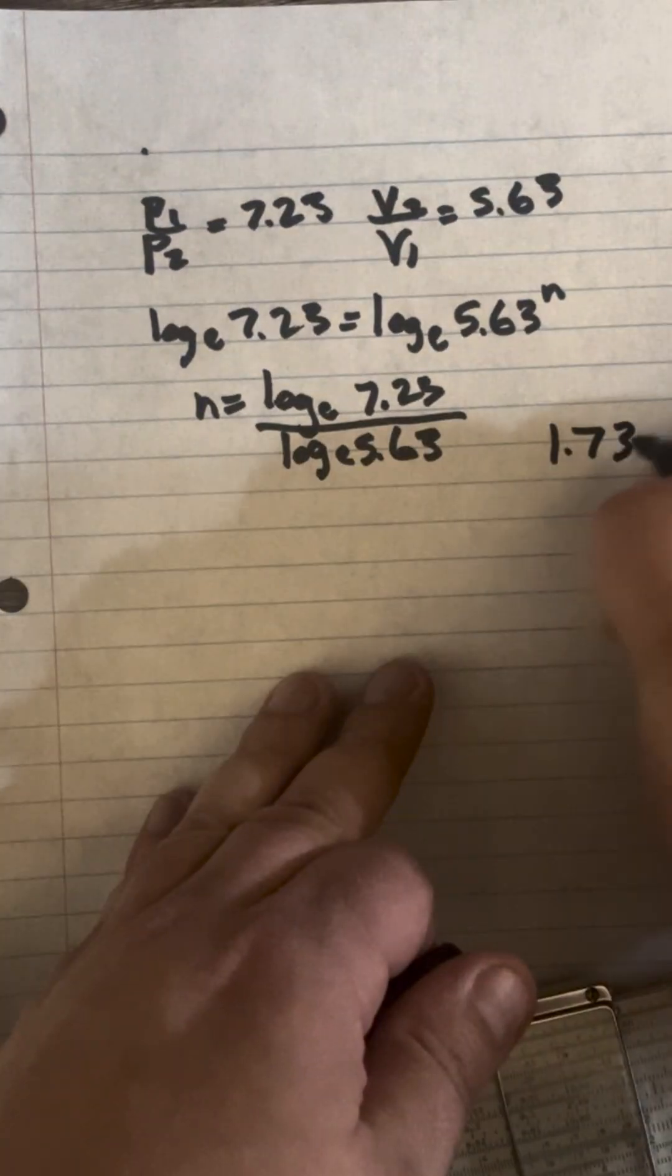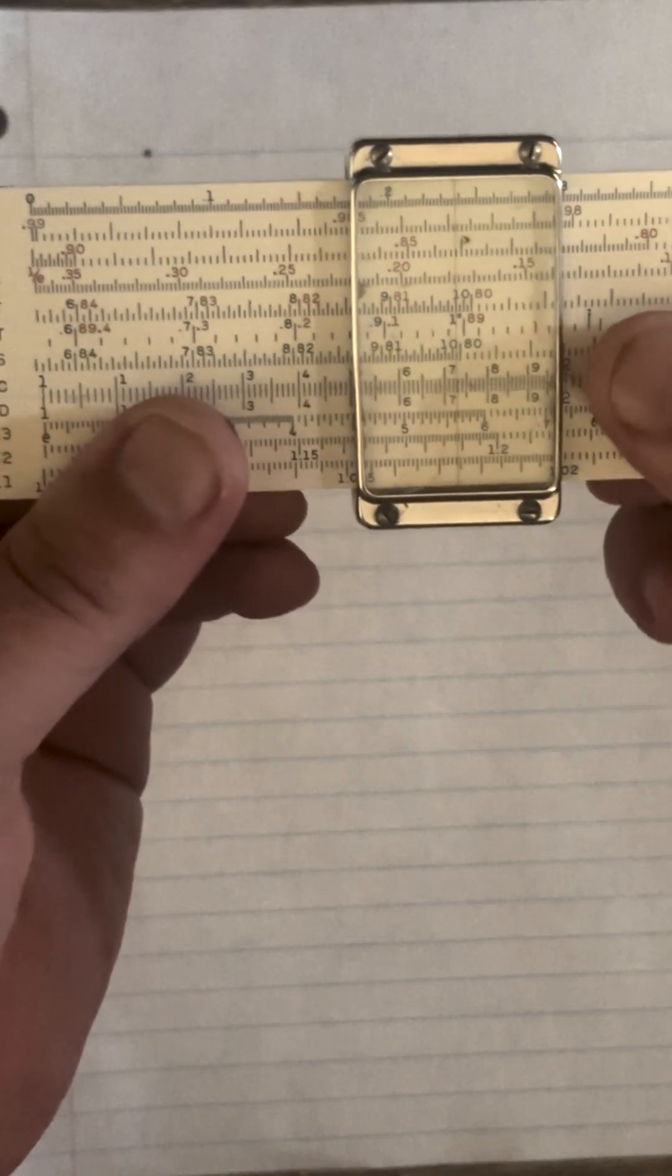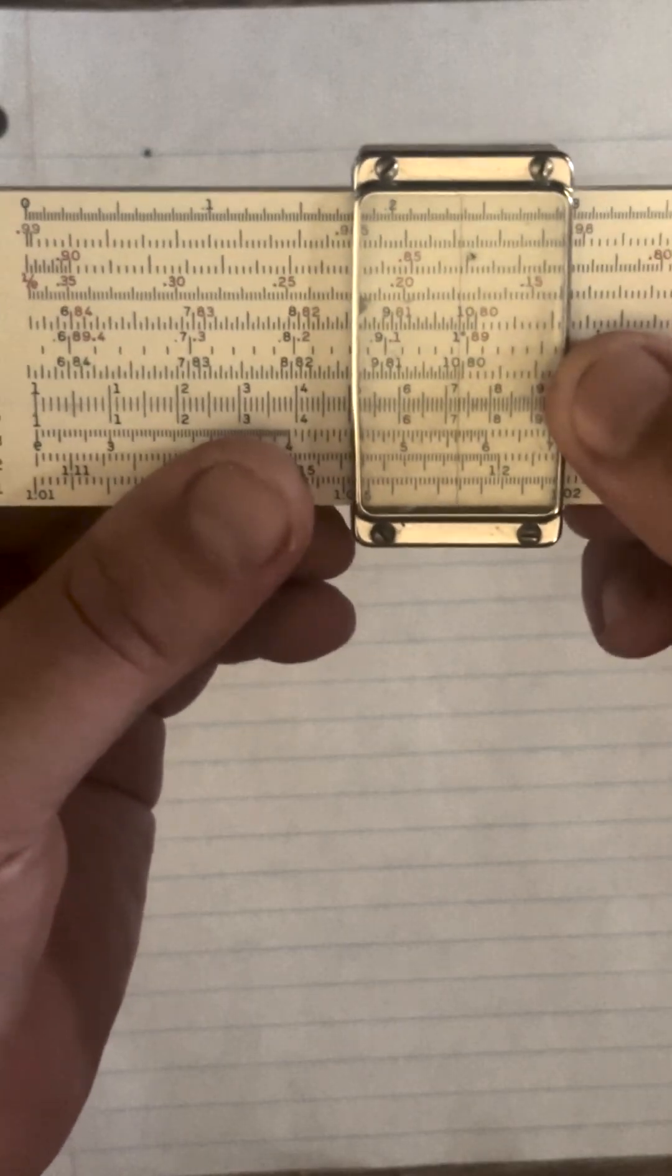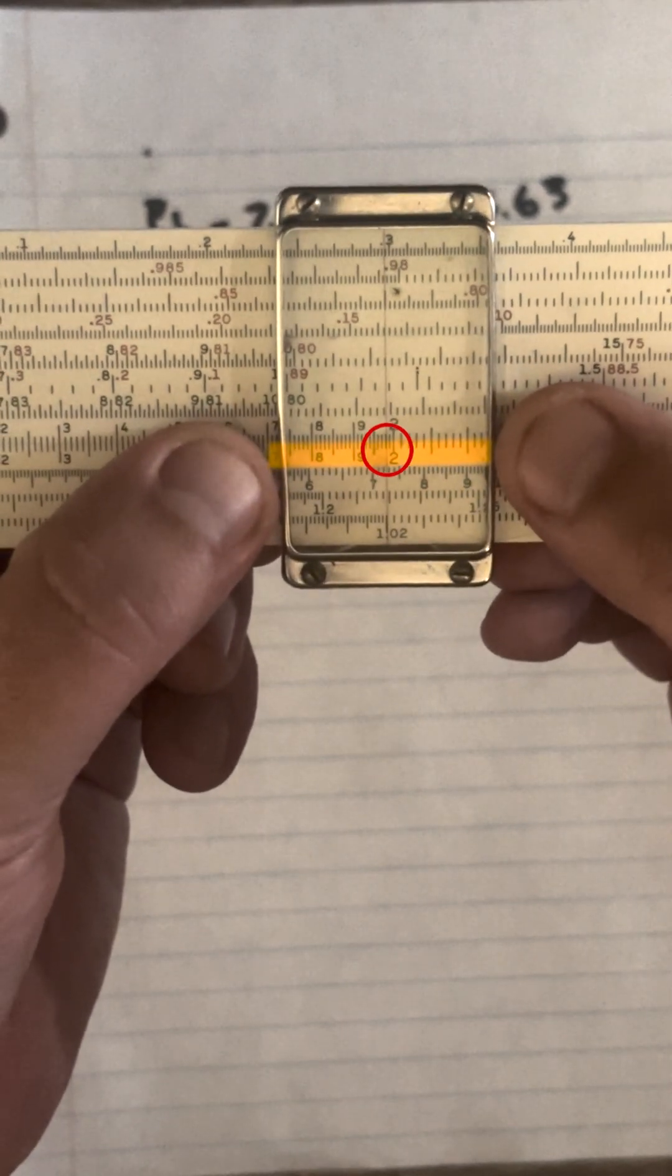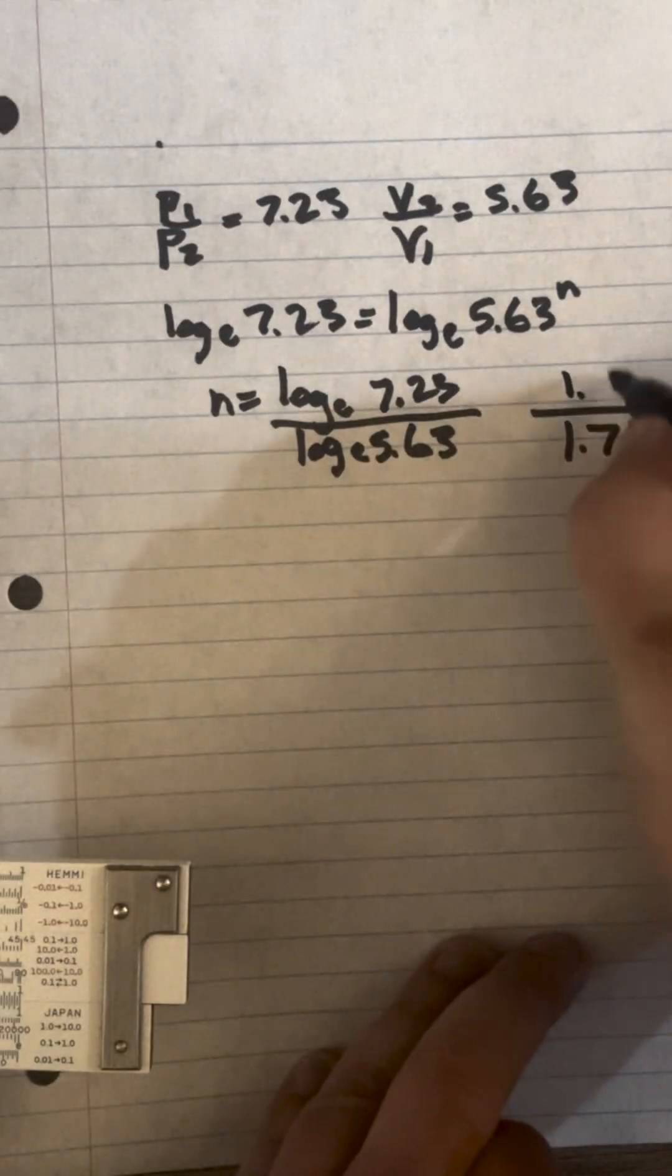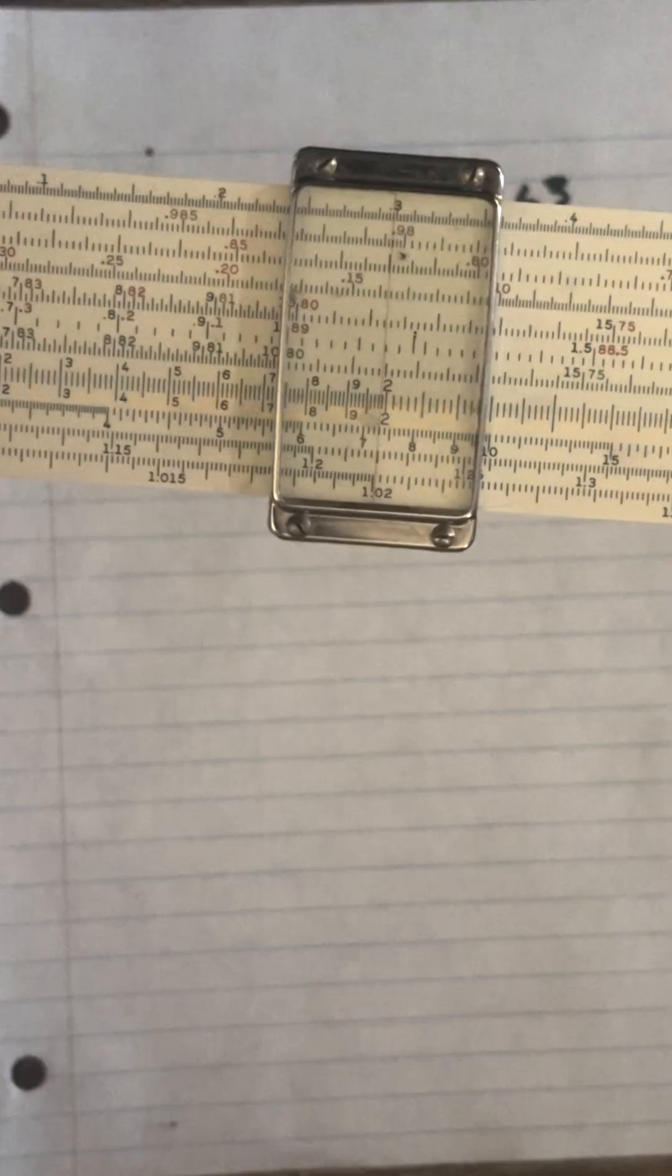Now on LL3 we're going to find log of 7.23, so I'll move the hairline over to 7.23, and we're at 1.98 on D. So 1.98. That's division and we know how to do that.